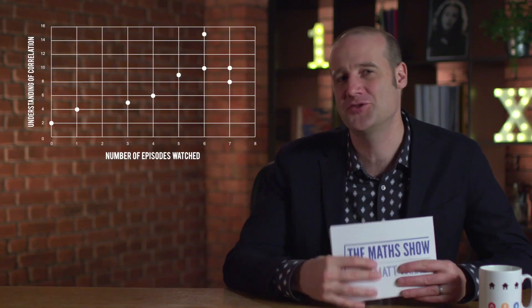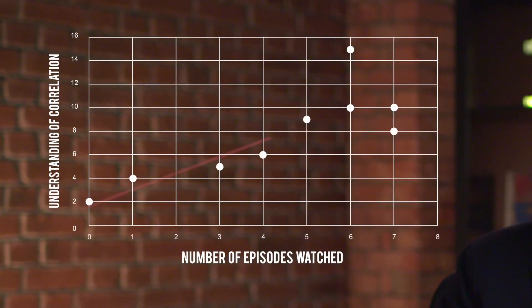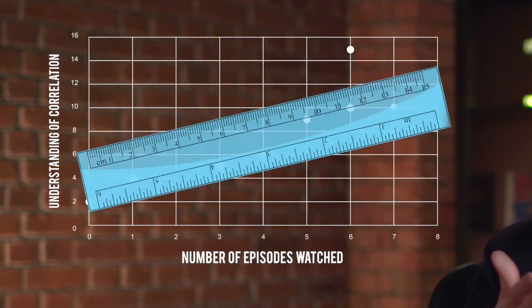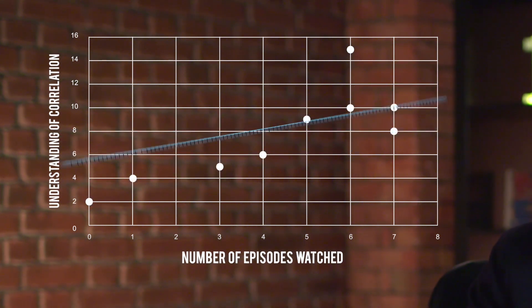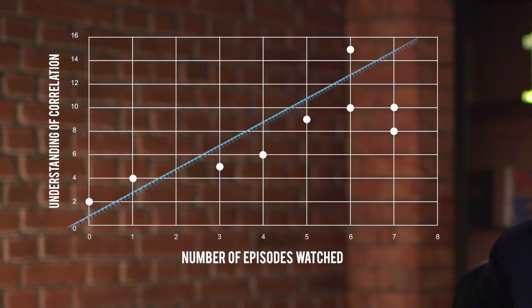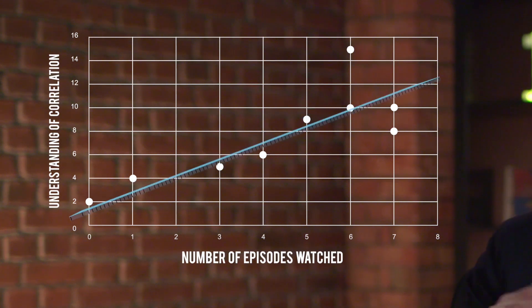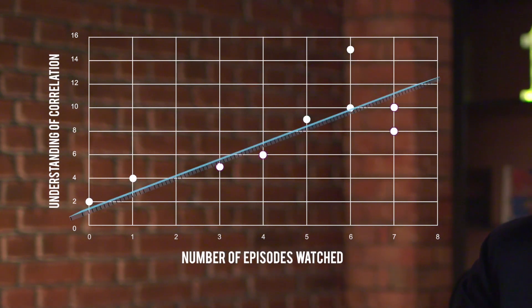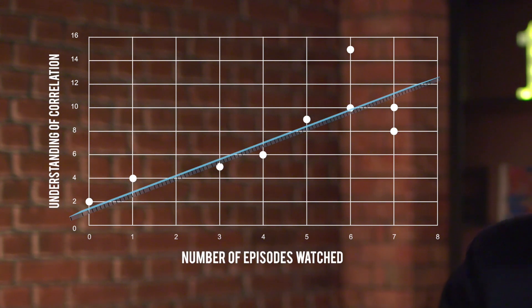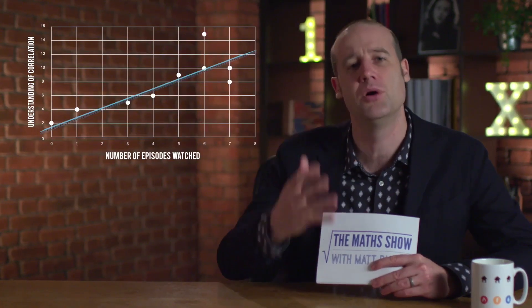To investigate what kind of trend it is, we need to add a line of best fit. To do this, you take a ruler. It actually helps if you put it up on its edge so you can still see all of the data, and then arrange it so there's roughly half the data points on each side and it's as close to the data as possible. But bear in mind, it's called a line of best fit, not a line of perfect fit.